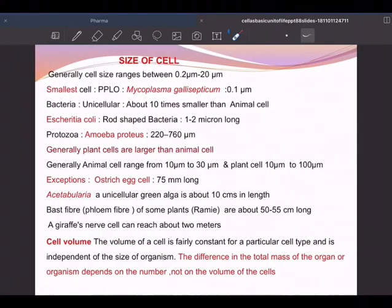What about the size? Size ranges from 0.2 micrometer to 20 micrometer. The smallest one is, you must remember, PPLO. What is this PPLO? Every time in the examination, CBSE exams, NEET exam, it will be asked. It is Pleuro Pneumonia Like Organisms. Mycoplasma is responsible. Look at that why it is smallest: because of this 0.1 microns. Bacteria, unicellular, about 10 times smaller than animal cell. E. coli, rod-shaped bacteria, 1 to 2 microns long. Ostrich egg is the biggest, 75 mm long. So the cell volume will be decided by the size.